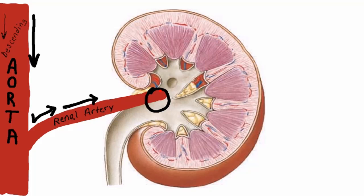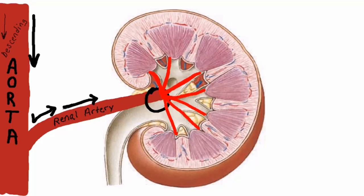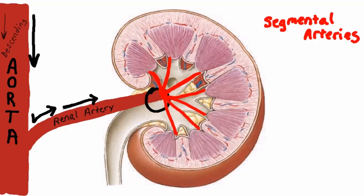When we go from the pelvic region up through the minor calyxes to the base of the pyramids, the renal artery splits off into segments — one for each pyramid — going through the minor calyx and pelvis up into the pyramids. Since these are the segments that the renal artery branches into, they are called segmental arteries.